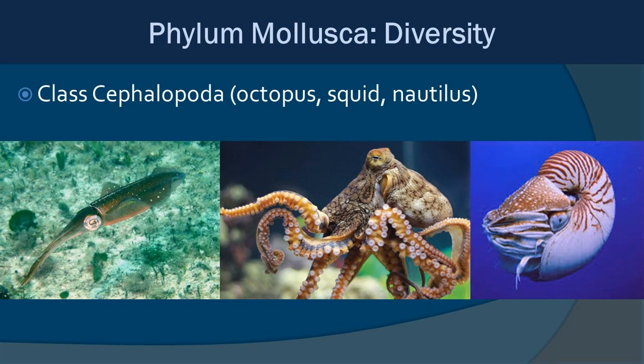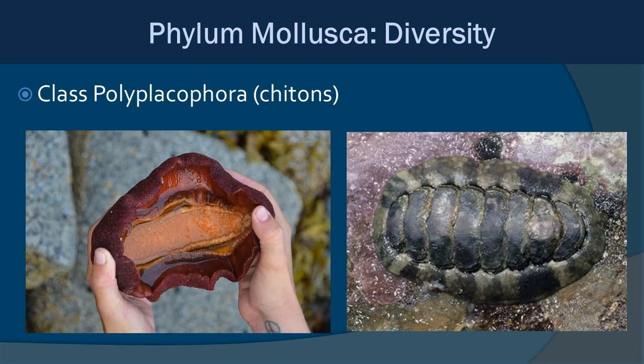Class Cephalopoda includes your octopus, squid, and nautilus. These are one of the more extreme morphologies within the phylum, but also some of the most intelligent. Class Polyplacophora are your chitons — they have an eight-segmented shell. We have hairy chitons locally, and you can find them relatively large in the Indo-Pacific. That eight-segmented shell gives them their uniqueness.